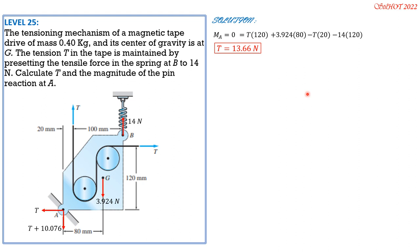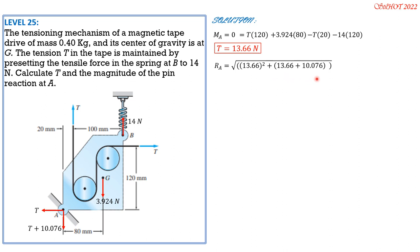The magnitude of the pin reaction at A is √(T² + (T + 10.076)²) = √(13.66² + (13.66 + 10.076)²) = 27.39 N.